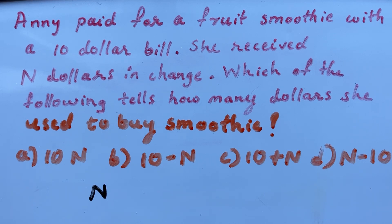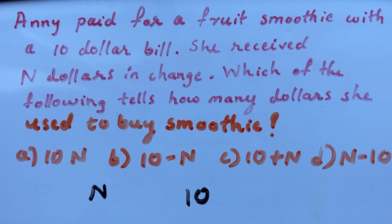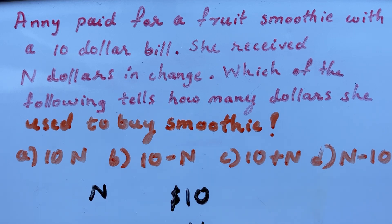Very simple question. Here n is the variable — we don't know how much she received in change, so n is some number we don't know, that's why we consider it a variable. Annie paid for a fruit smoothie with a ten dollar bill, and she received n dollars in change.